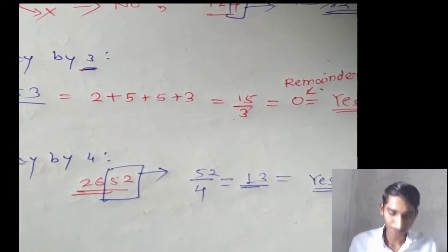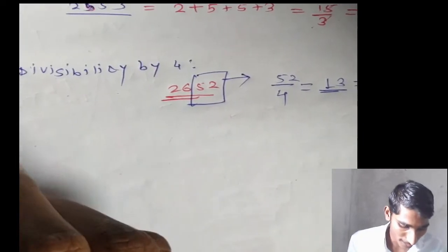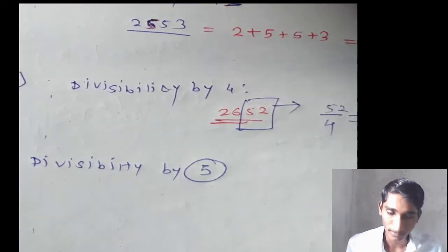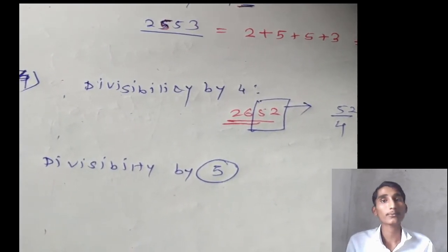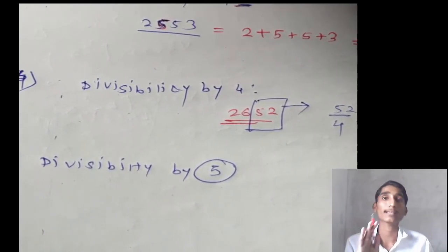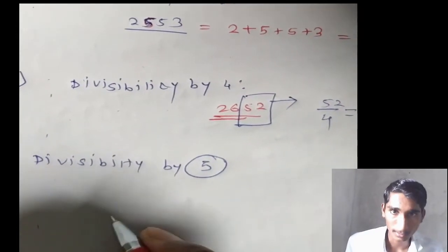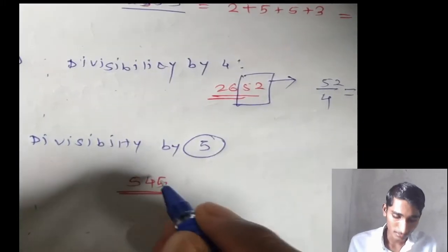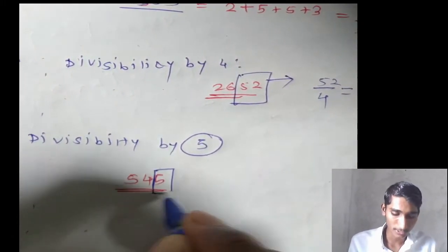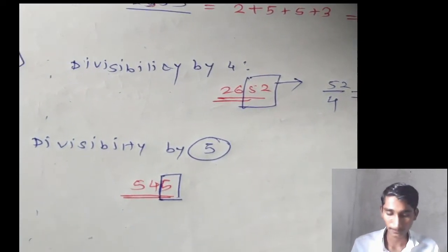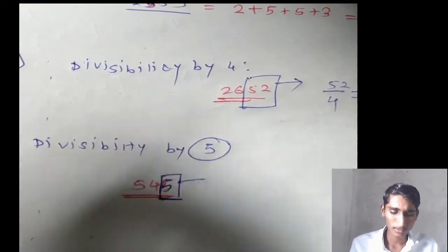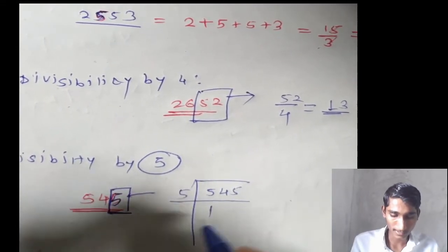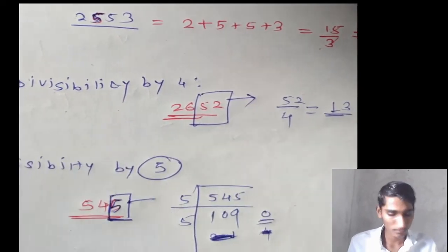Divisibility by 5: when the number will be divisible by 5, either its unit place is 0 or its unit place is 5. For example, take the number 545. The unit place is 5, so based on our criteria it should be divisible by 5. Let's verify: 545 divided by 5 gives us 109 with remainder 0. So the number is divisible by 5.